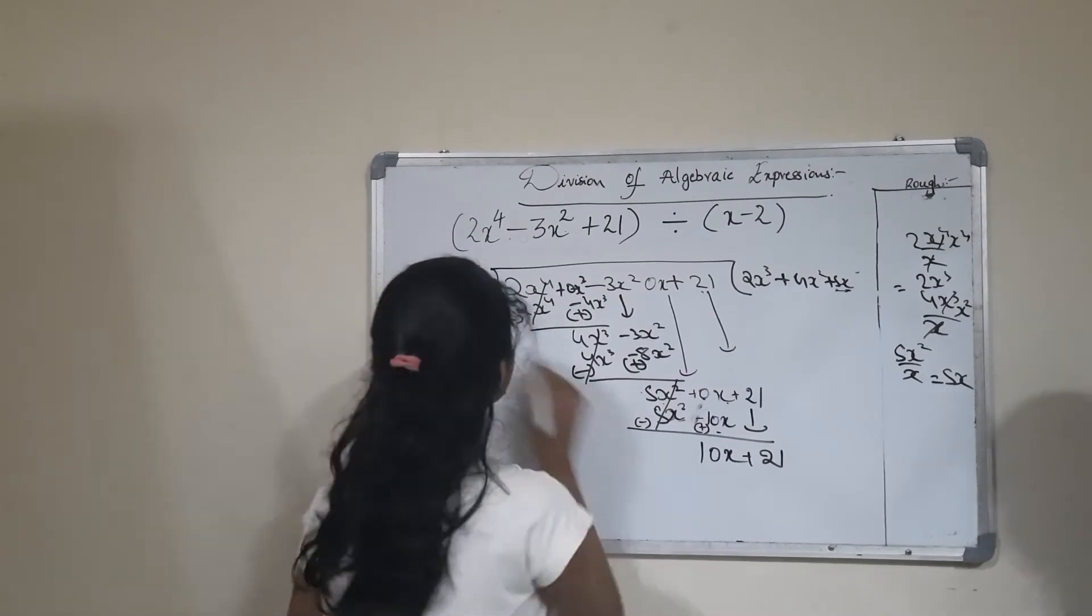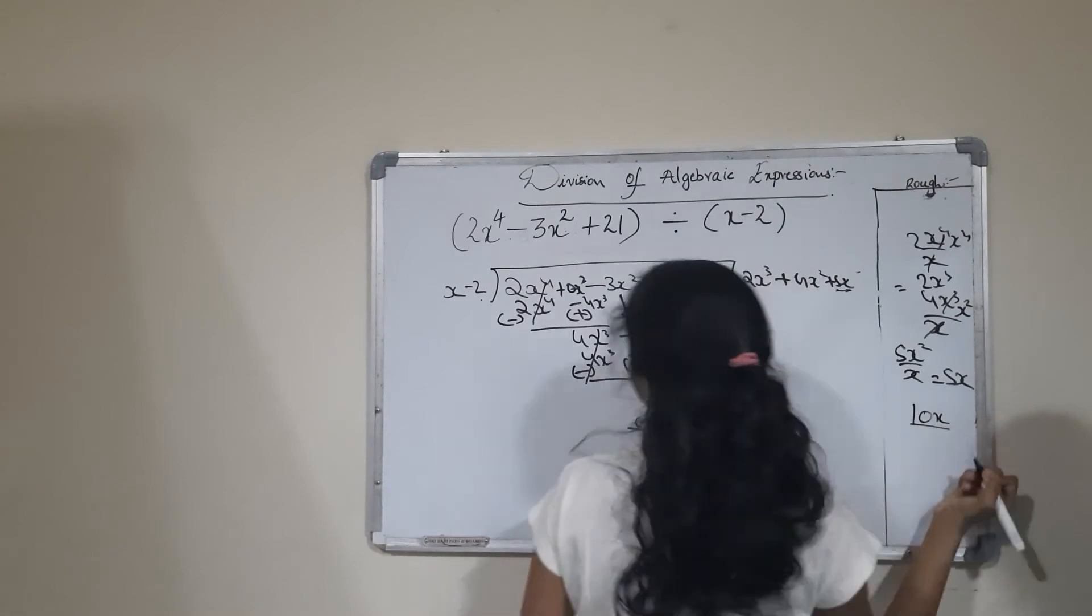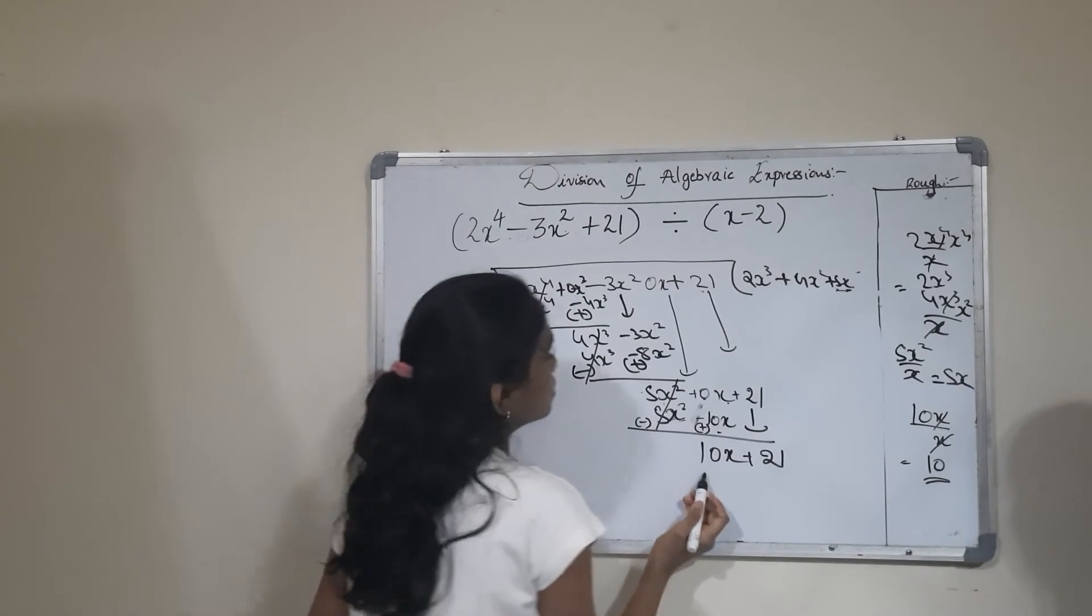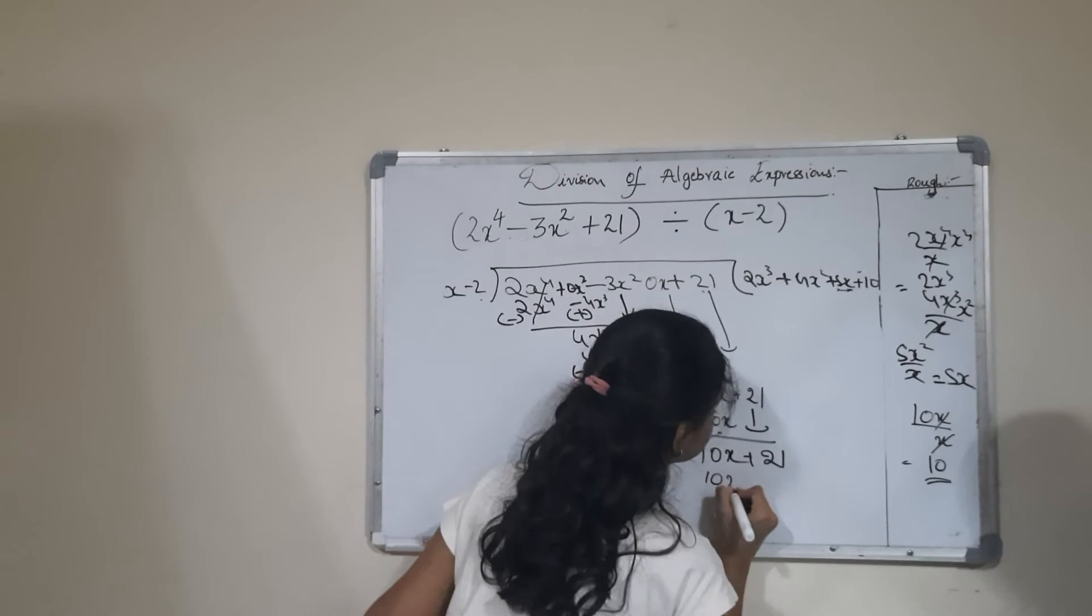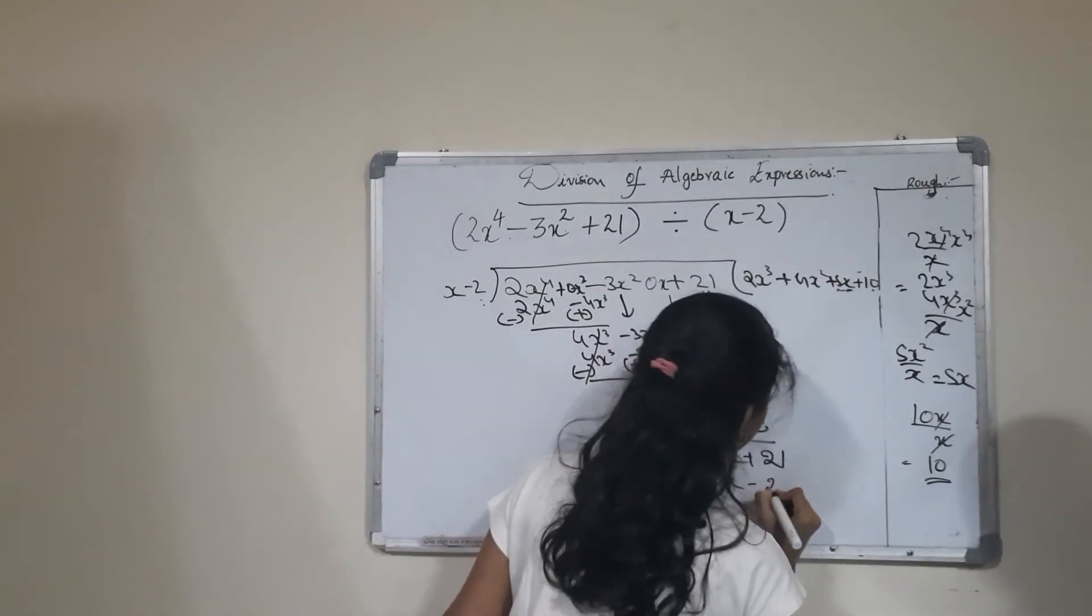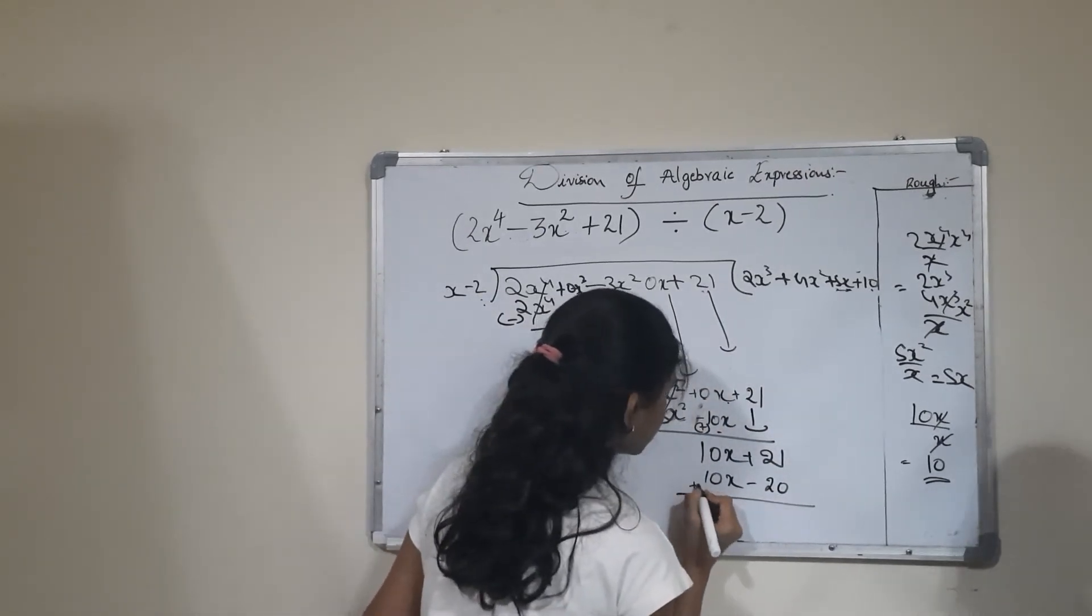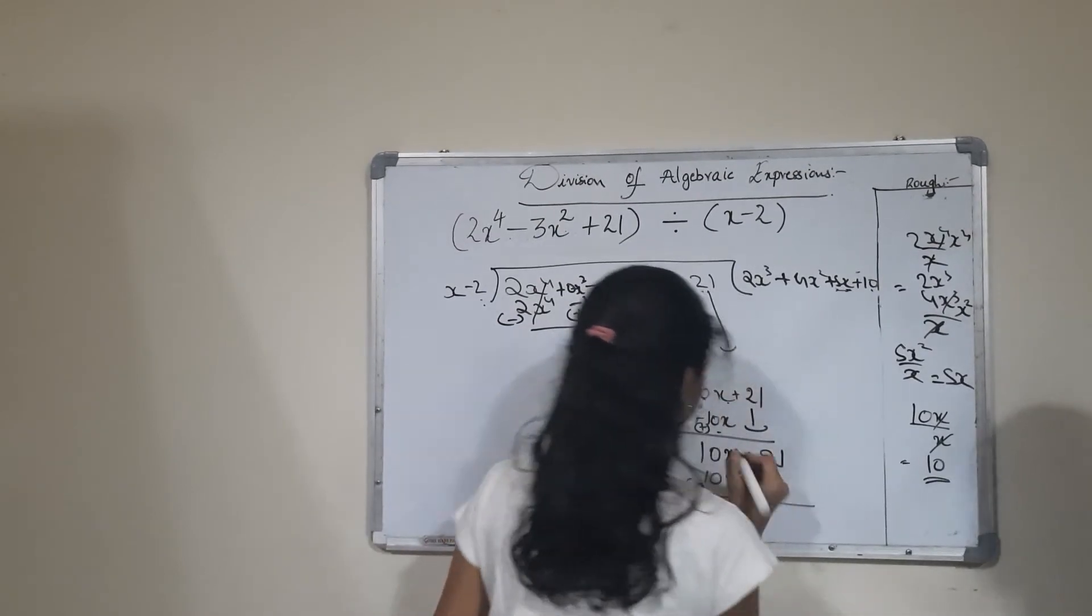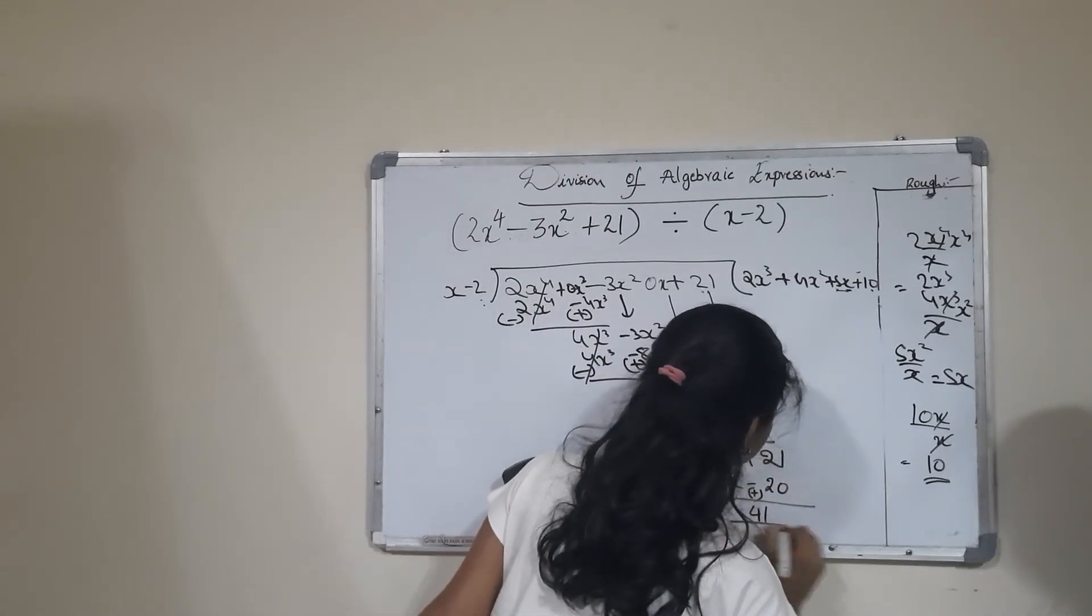Do the procedure again. 10x divided by x equals 10. Write +10. Multiply 10 by -2 to get -20. Subtract, changing the signs. The 10x terms cancel, giving us 40 as the remainder.